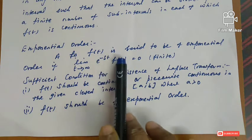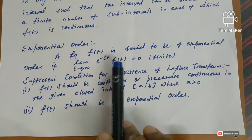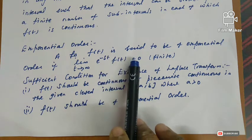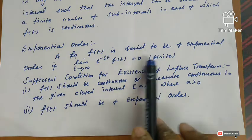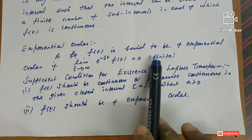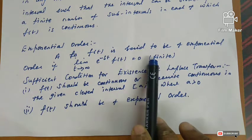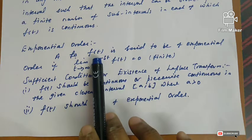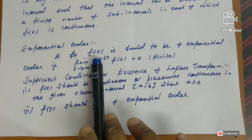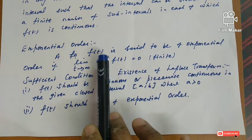Taking the limit as t tends to infinity with e power minus st and the function f of t — if the answer is a finite value, then the function is of exponential order.